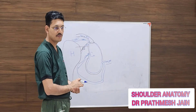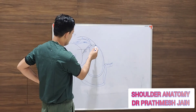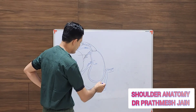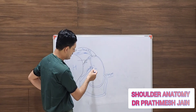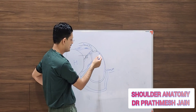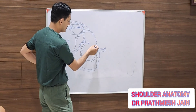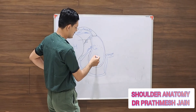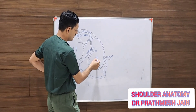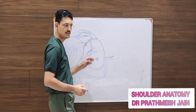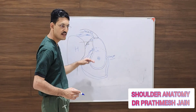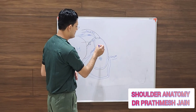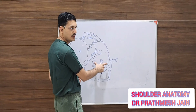Discussing the capsular anatomy of the shoulder: the glenoid is usually a pear-shaped structure with the inferior side broader than the superior side. If you make a circle on the inferior side, you can make a full complete circle, the center of which is called the bare spot. The superior part is narrower than the inferior part.